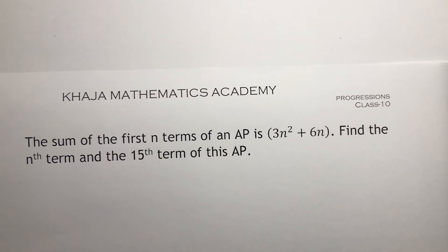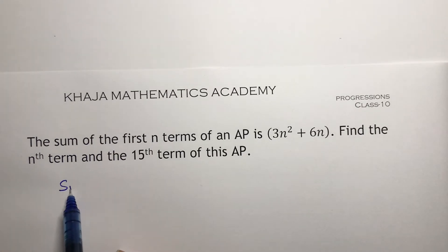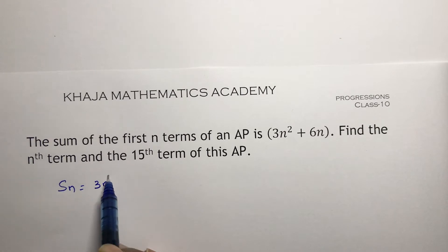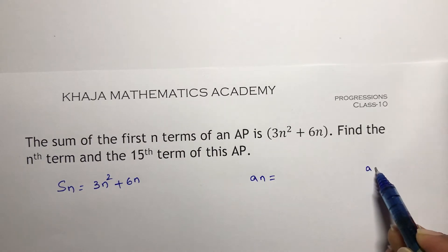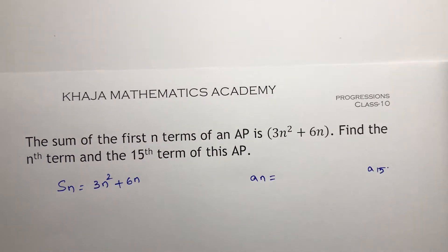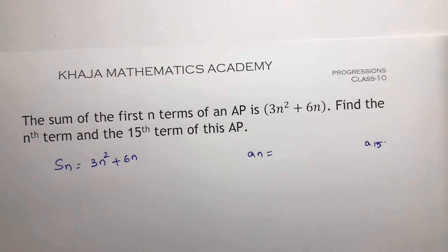The sum of n terms of an AP. So here S_n is 3n² + 6n. We need to find the nth term and the 15th term. So here S_n is the given sum of n terms.